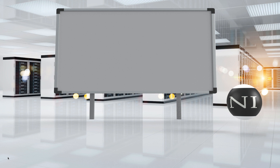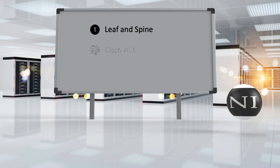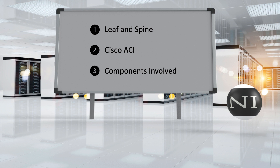In this quick education tutorial, we will look at the leaf and spine data center design architecture. We know this design to be a considerable step up from the traditional data center design. As a use case, we will focus on how Cisco has adopted a leaf and spine design with the Cisco ACI product. We will address some of the key components involved and how they form the ACI fabric, giving you a general idea of the architecture and how Cisco ACI operates.